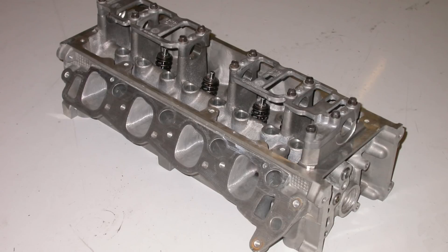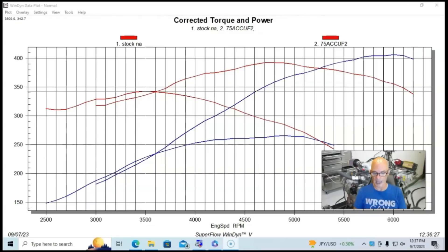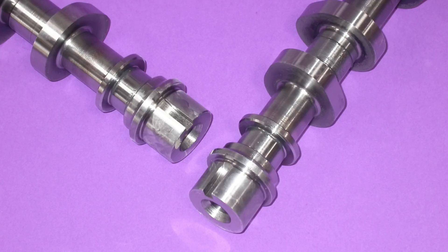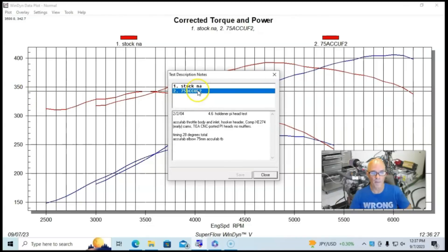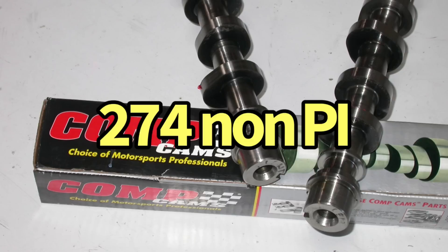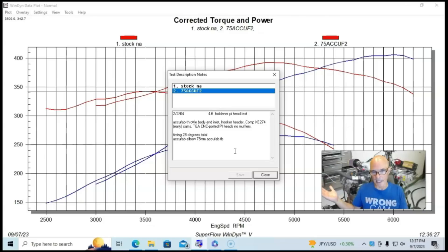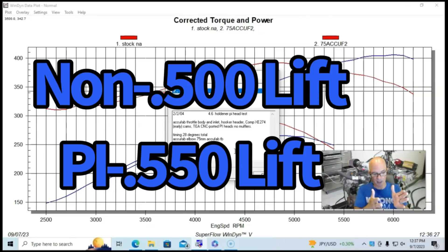So what we did to further improve the power on this combination, we did the PI head upgrade, but we did ported PI heads. This was back when Brian Tooley was the guy at Total Engine Airflow. And so we took a set of the ported PI heads that they did and put them on. We also put larger camshafts in this, knowing that we were going to want to make more power. We put a set of Comp Extreme Energy 274 non-PI cams. We could have used PI cams as well.